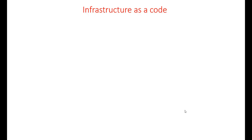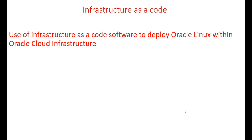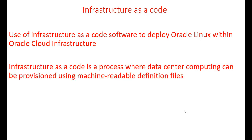We're going to talk about infrastructure as code. The use of infrastructure as code software to deploy Oracle Linux within Oracle infrastructure — this is not only for Oracle; it can be done with any cloud provider. Terraform can be used for AWS, Microsoft Azure, and others. It's open source software. Infrastructure as code is a process where data center computing can be provisioned using machine-readable definition files, so no manual intervention is needed.